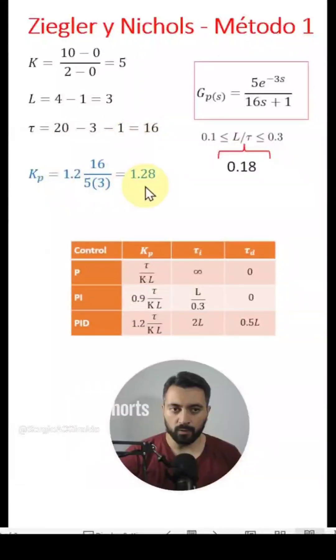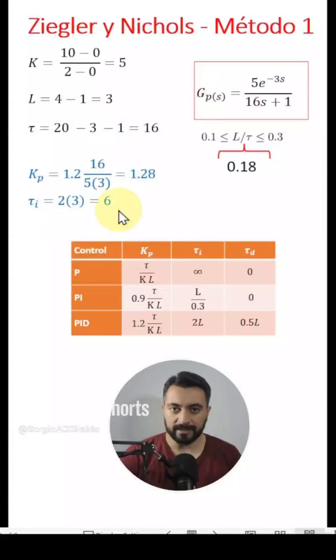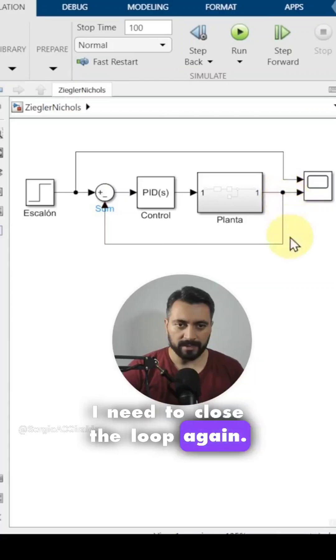The proportional gain will be 1.28, the integral time will be 6, and the derivative time will be 1.5. I need to close the loop again.